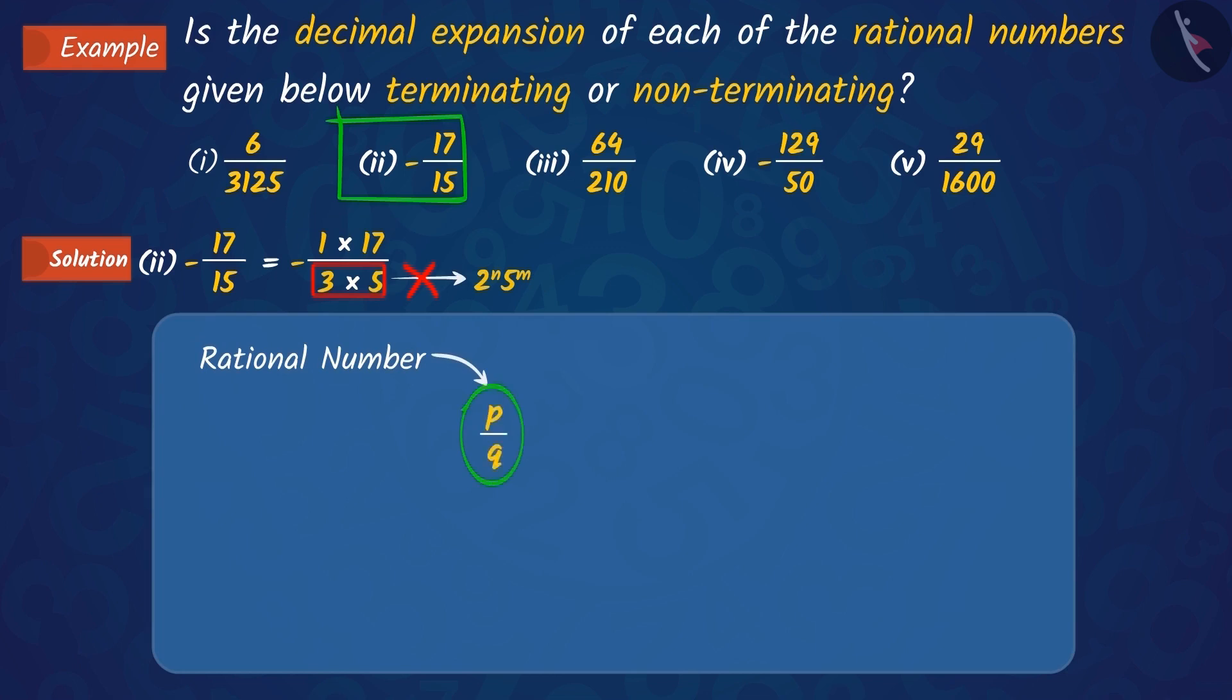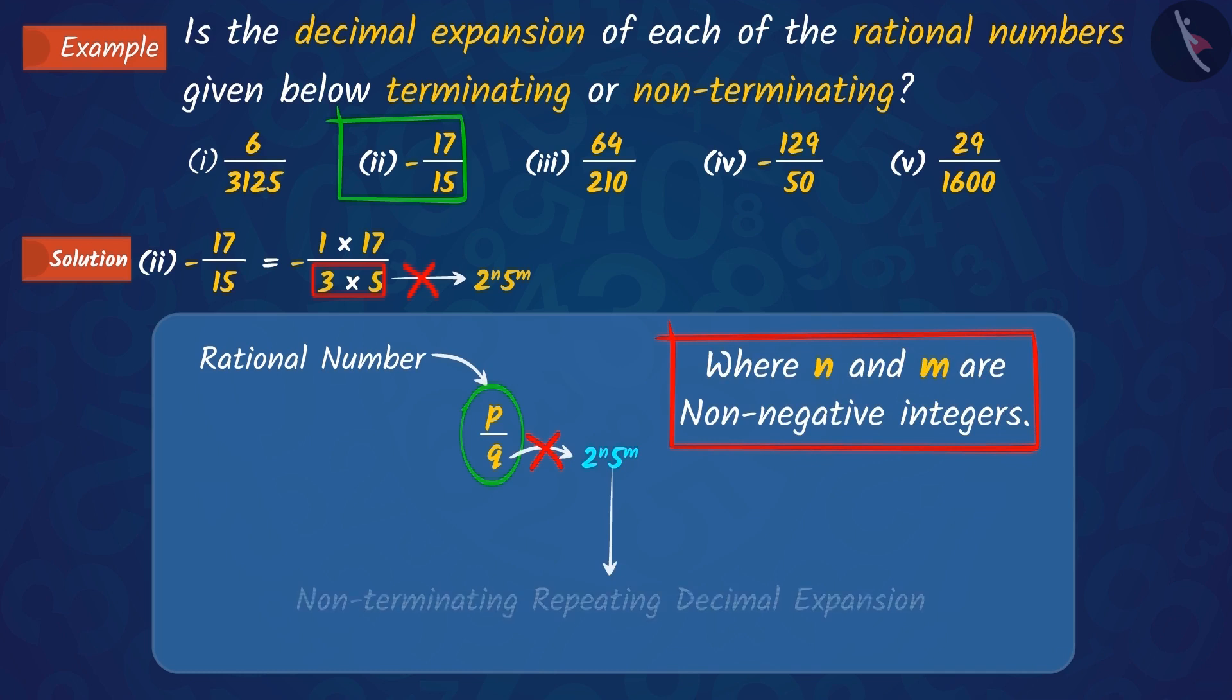You will remember that in a rational number p upon q, if q is not in the form of 2 raised to n into 5 raised to m, then the decimal expansion of the number is non-terminating.